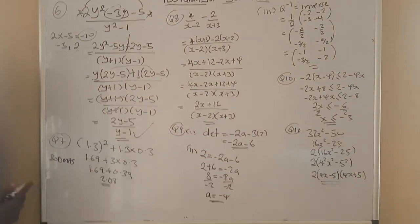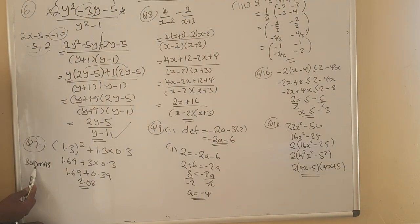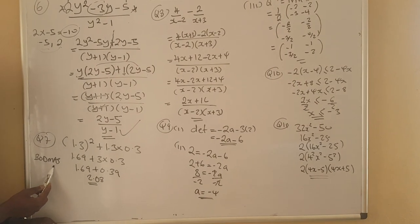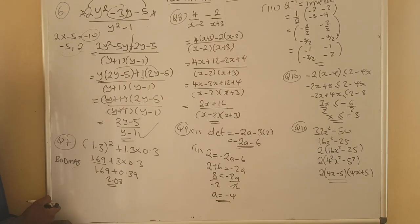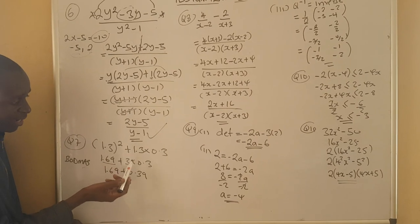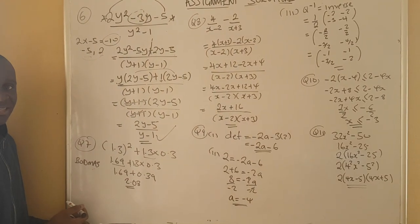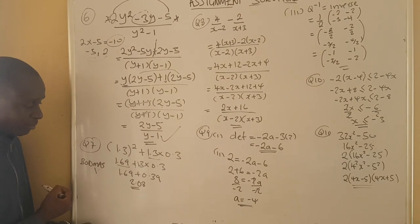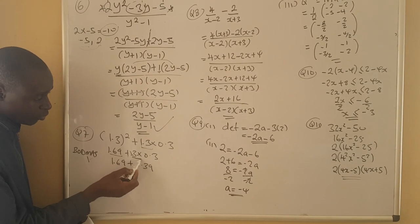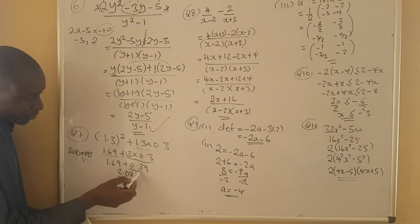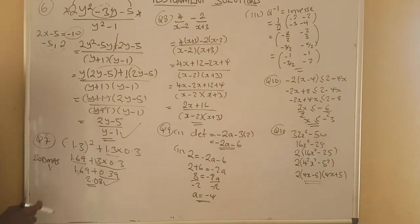Question 7 was based on BODMAS — Brackets, Division, Multiplication, Addition, and Subtraction. We begin with what is in the brackets: 1.3 squared equals 1.69. Then multiplication comes before addition: 1.3 times 0.3 gives 0.39. Adding 1.69 plus 0.39 gives 2.08. This was fairly simple — BODMAS assessments will always appear in the examination.